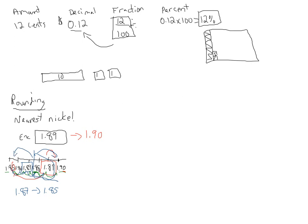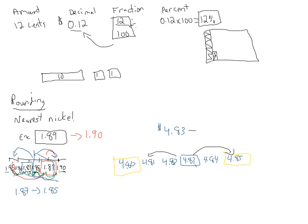Let's do another example: four dollars and eighty-three cents. I'm going to stick that on the number line for eighty-three, count up until I get to the nearest five or zero on the end, and also count down. Four eighty-two, four eighty-one, and finally four eighty. So we're talking about four eighty-three — is that closest to four eighty-five or four eighty? From this picture you can see pretty easily that we're closest to four eighty-five; it's only two cents away, and it would be three cents away in the other direction. So four eighty-three would round to four dollars and eighty-five cents.